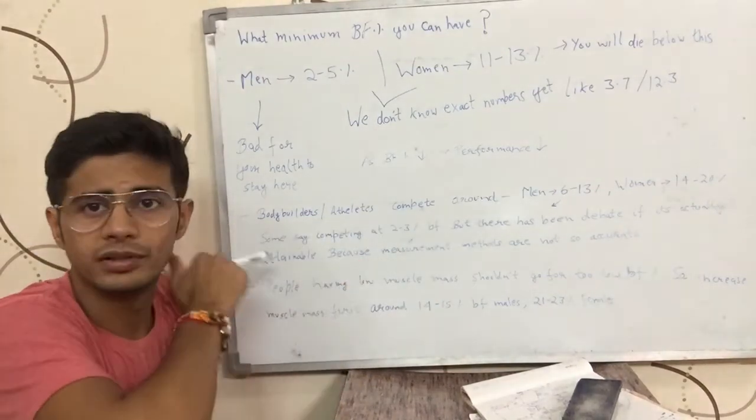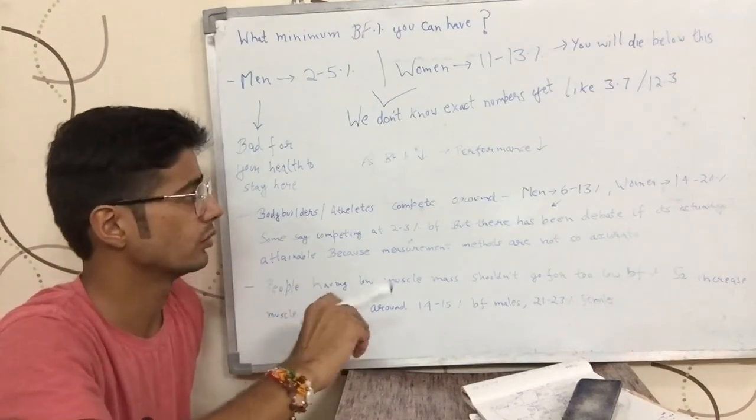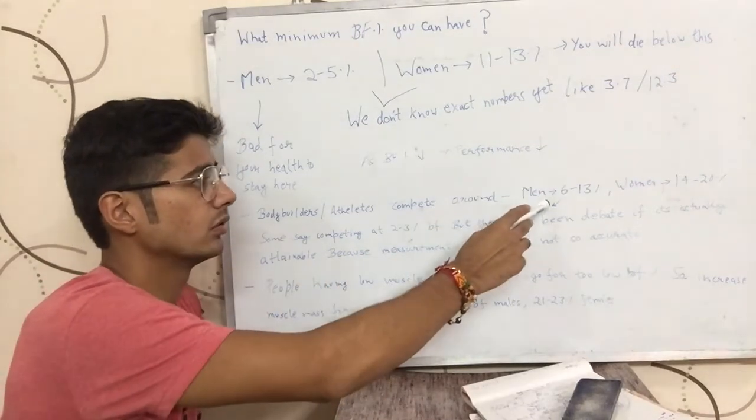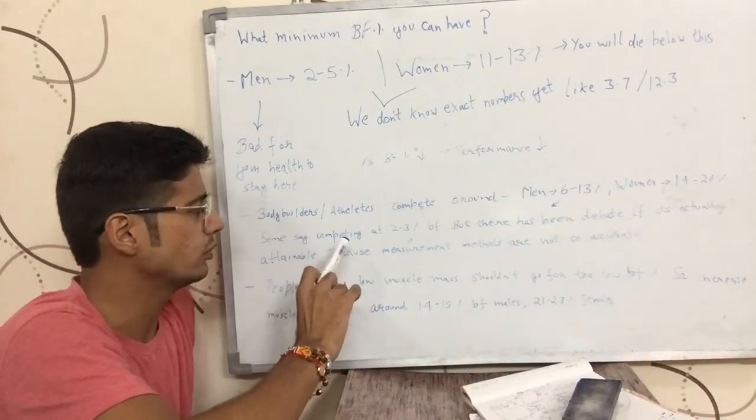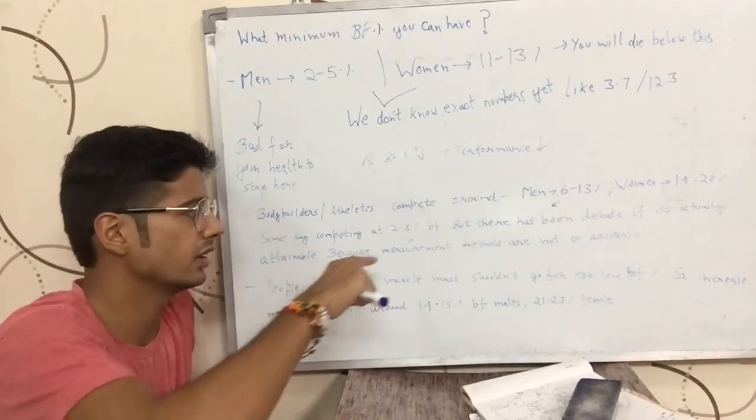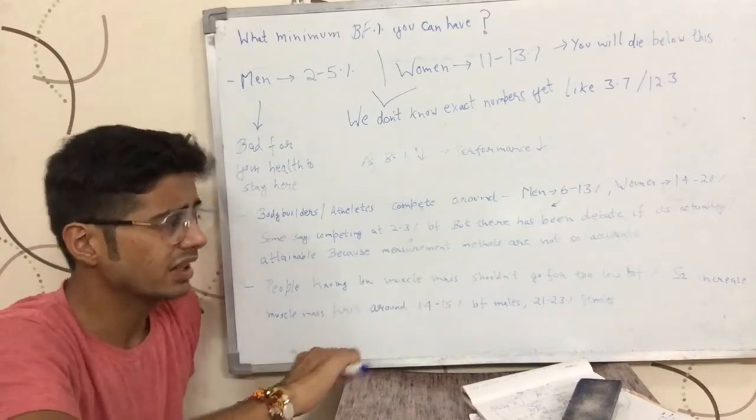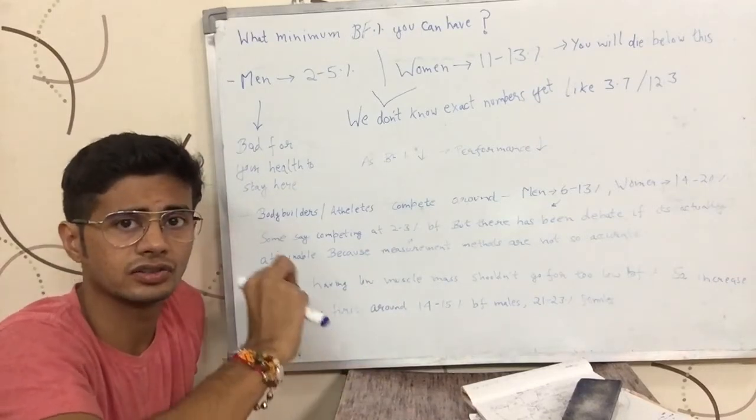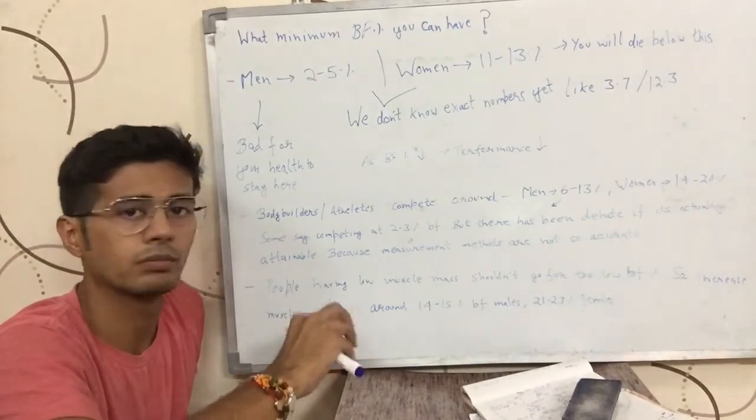A lot of bodybuilders compete on stage, they would show their body, and they compete around this 5% range. Now, you might have come across pictures on the internet with a photo of a bodybuilder saying this bodybuilder has 2-3% body fat. But there has been a debate if such low fat percentages are actually attainable or not by the human body.